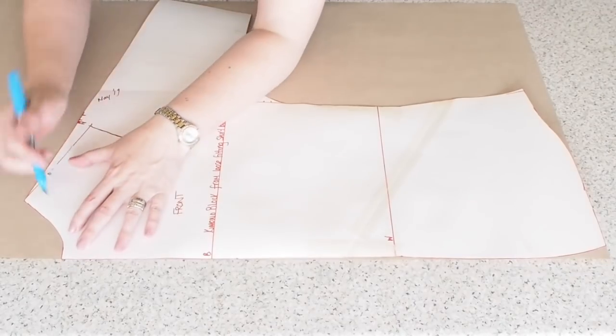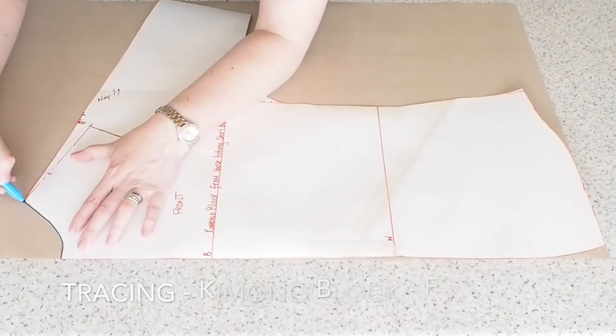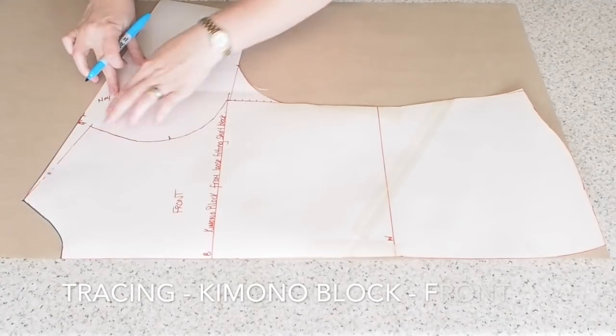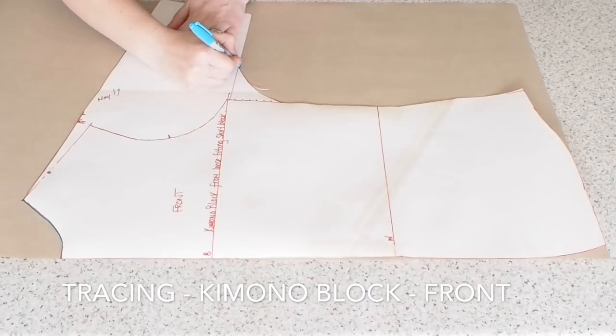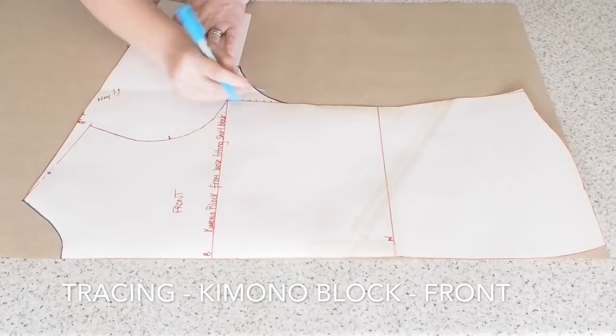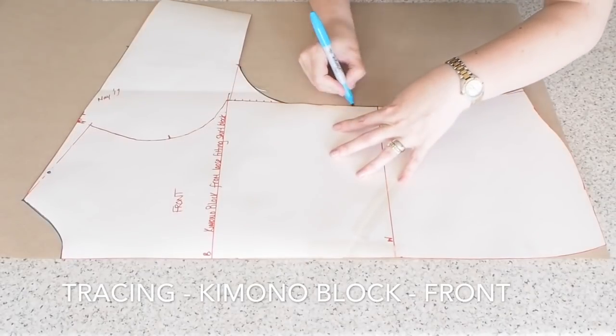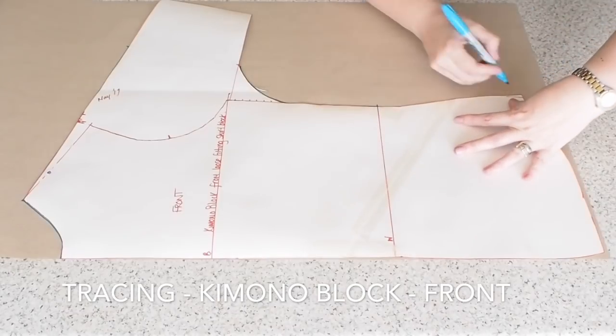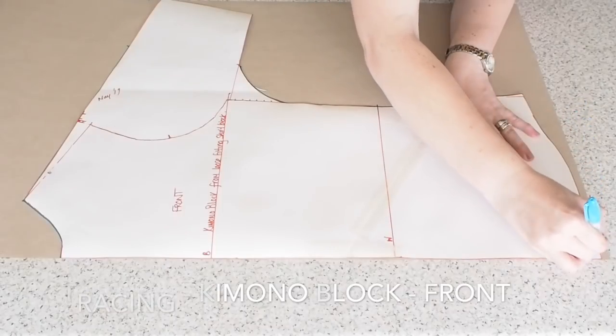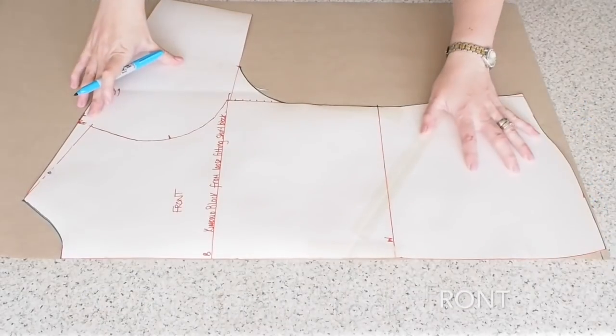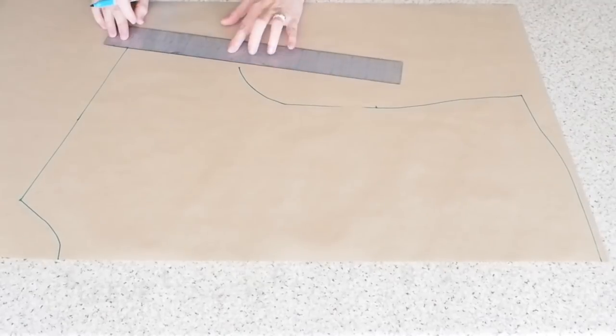And now on to the front. So doing exactly the same thing here again. So tracing my kimono block. Tracing down to five inches up from the sleeve hem. So that's that done. Just drawing in the end of my sleeve.